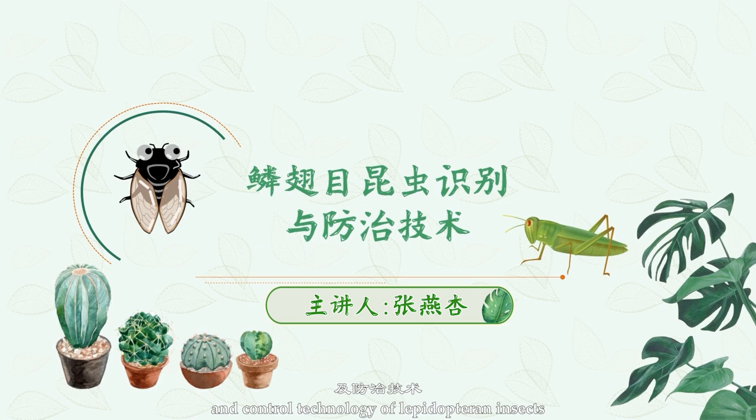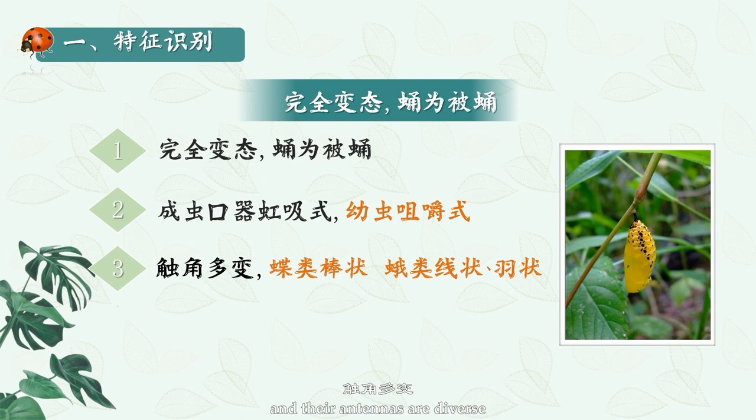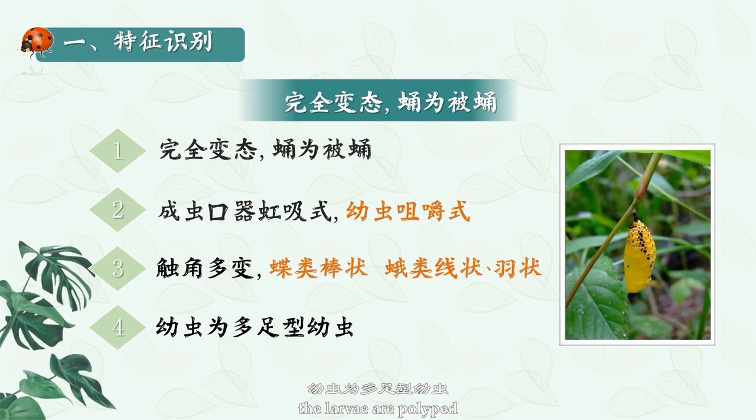Lepidopteran insects are complete metamorphic insects. The pupa is the abducted pupa. Adult mouthparts are a siphon type, larvae are chewing types, and their antennae are diverse. The butterflies are clavate, and the moths are filiform plumose, etc. The larvae are polyped.